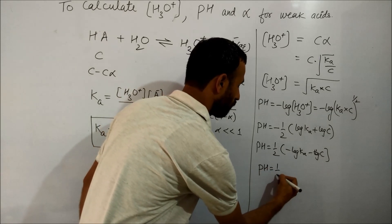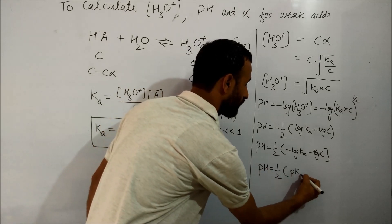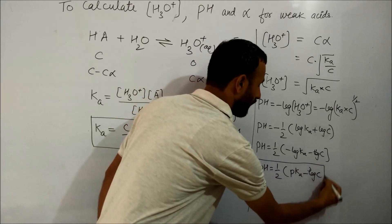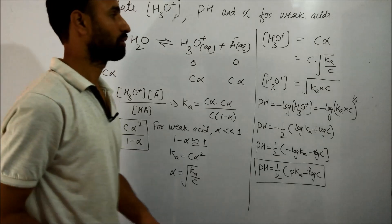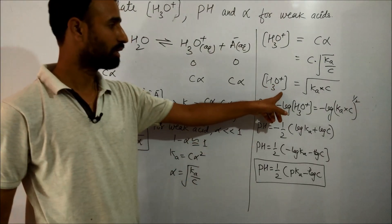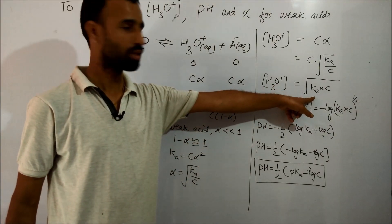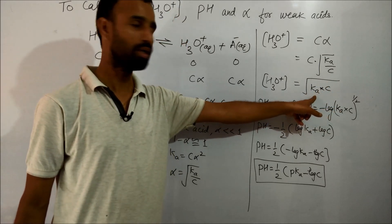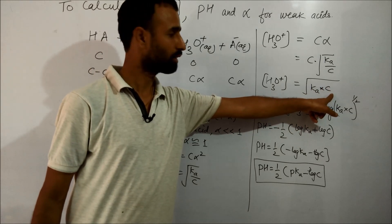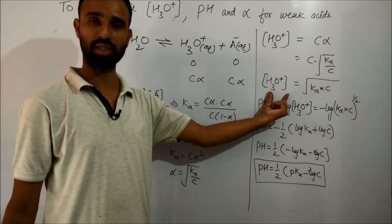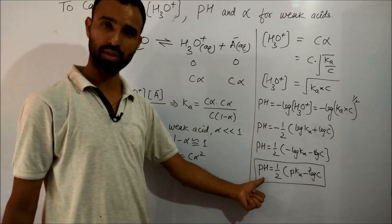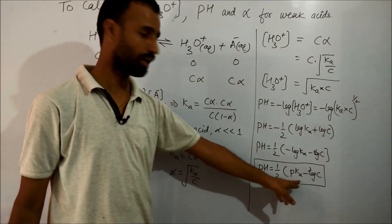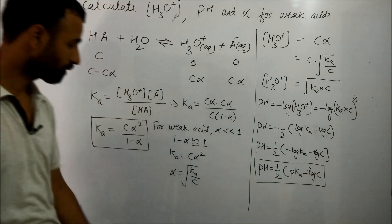And minus log of Ka is pKa. So pH equals half of (pKa minus log C). For weak acids, you can calculate [H3O+] by using this relation: square root of Ka times C, the dissociation constant of acid times concentration. You can calculate pH by using this relation: half of (pKa minus log C).